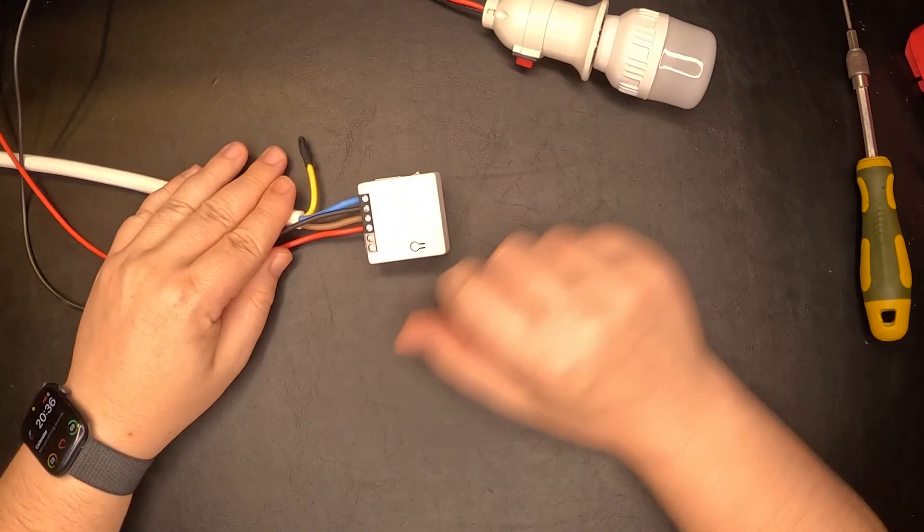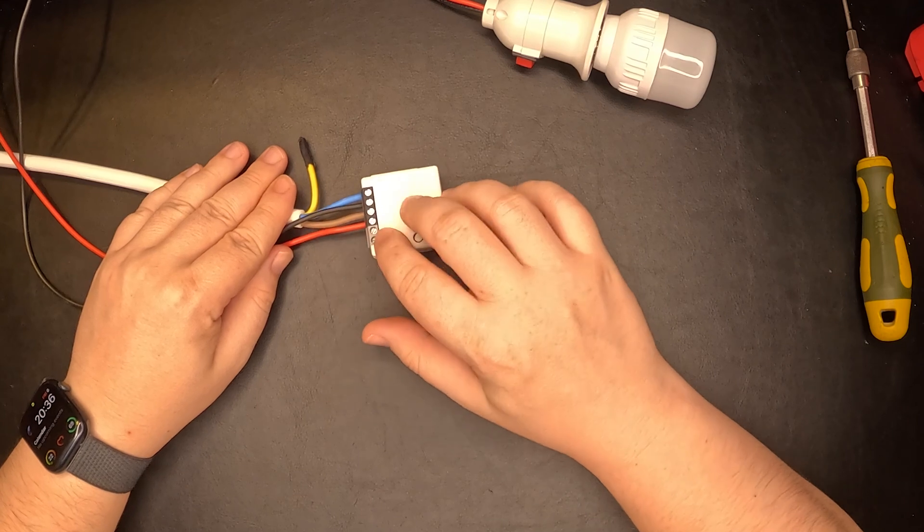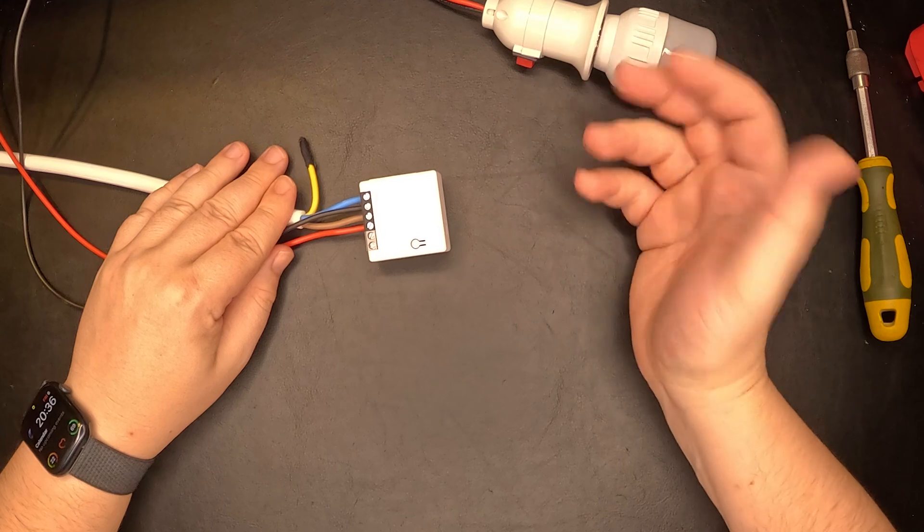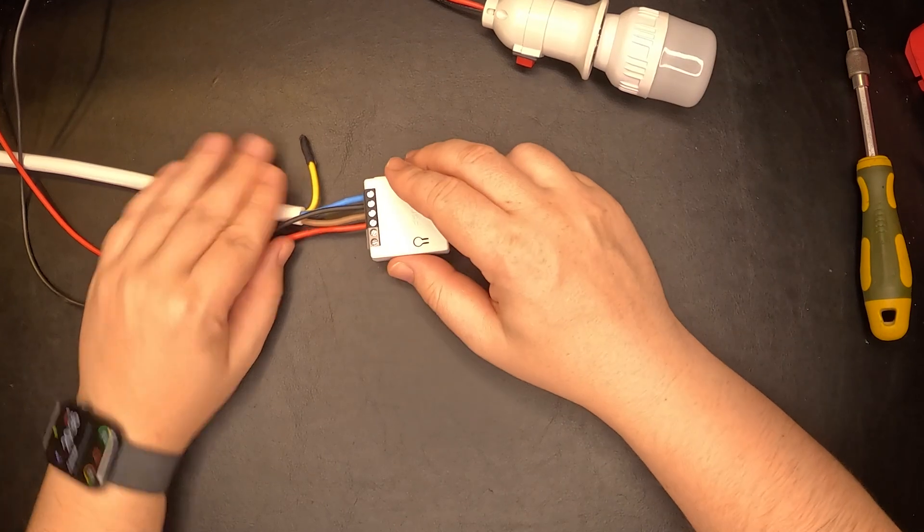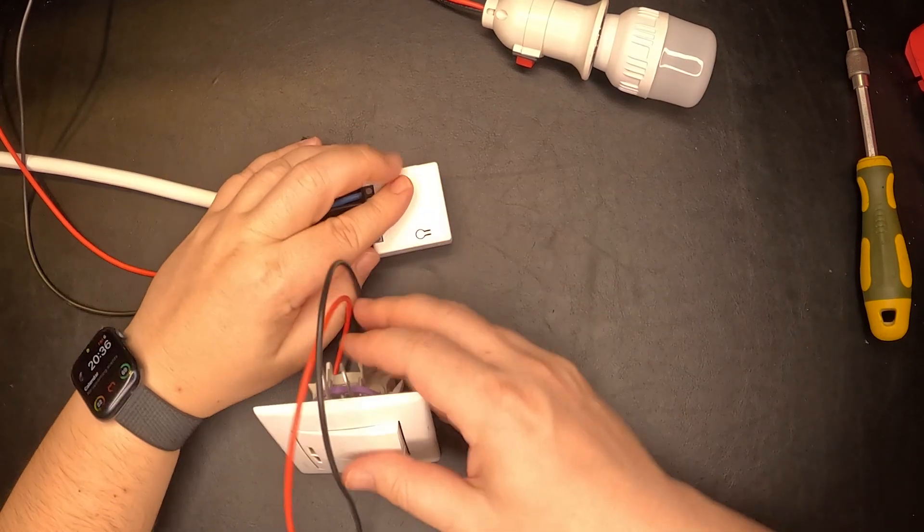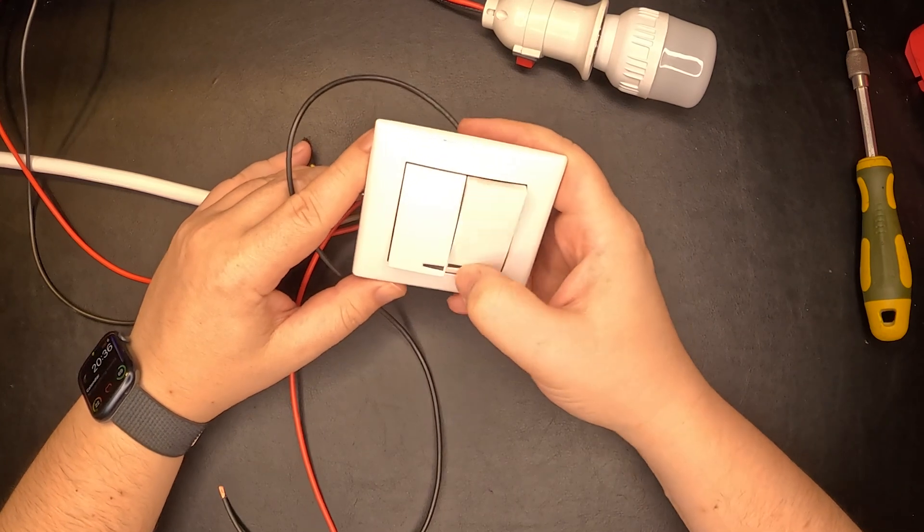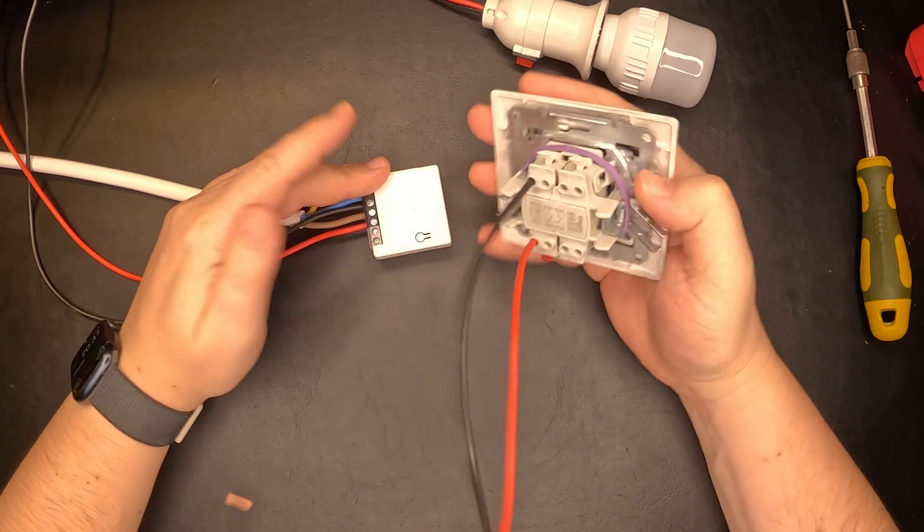But we're not done because we have another connector here. This is used for manual operation of the switch in case you don't want to use your home automation. For that, I'm going to use a standard live switch. This one has two positions, but we're only going to use one.